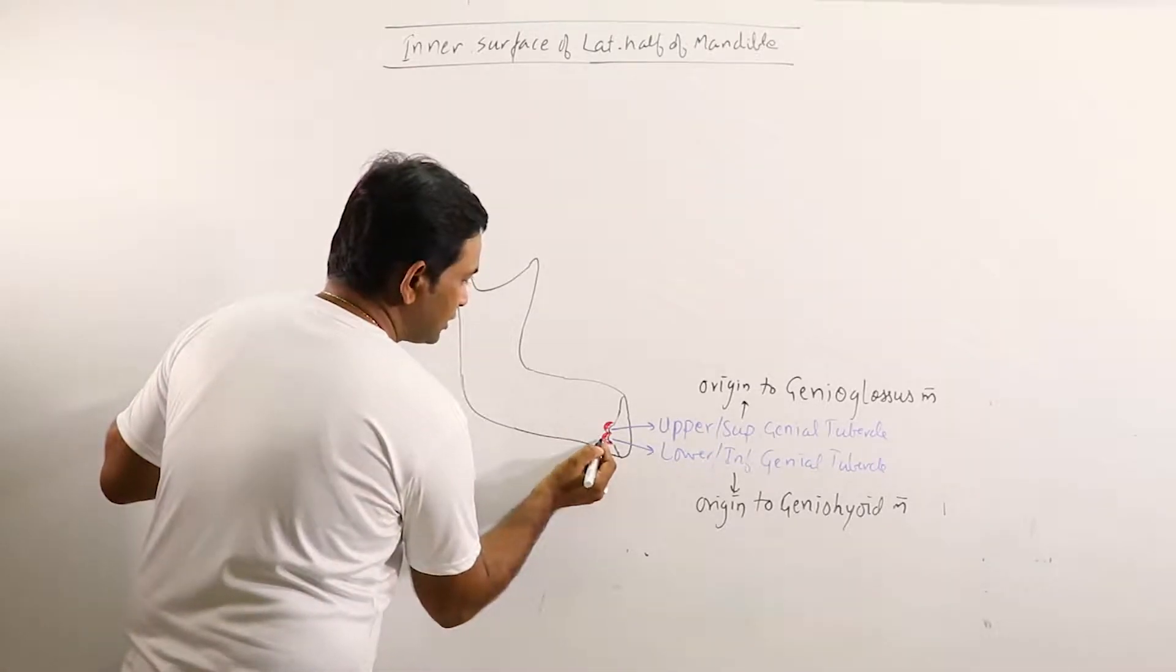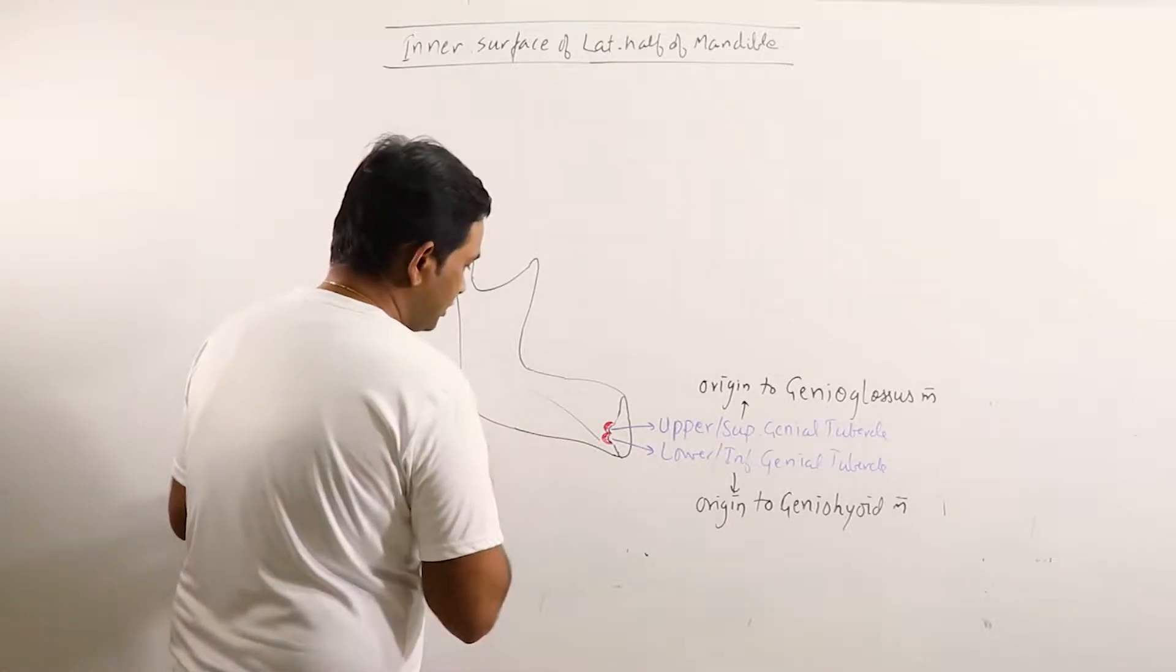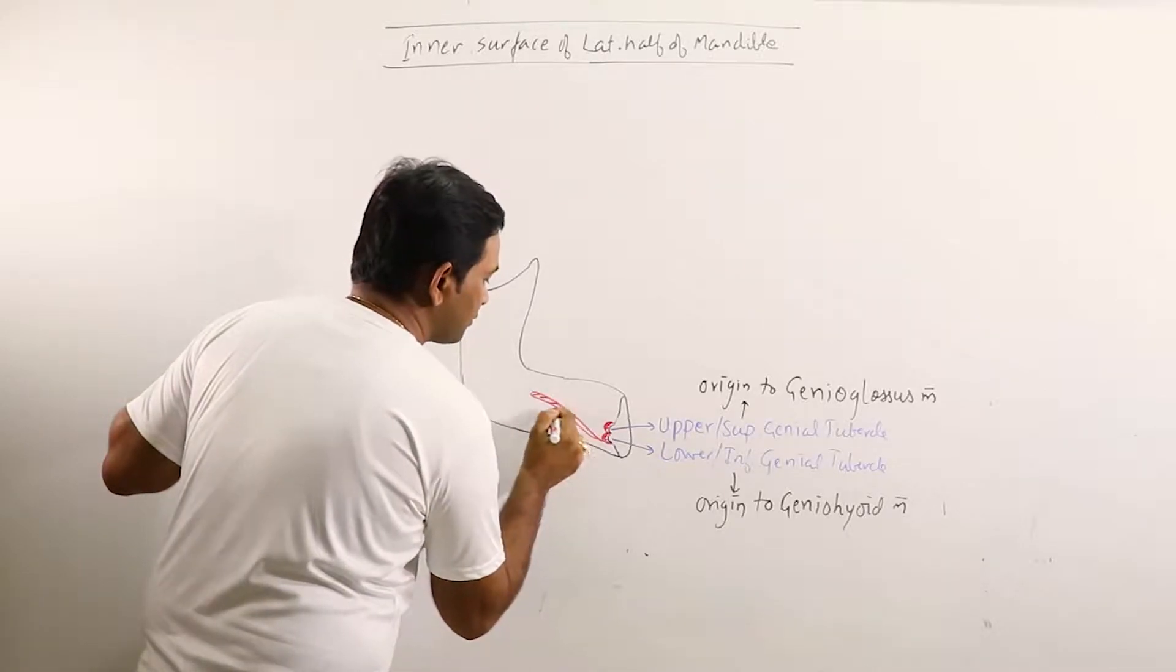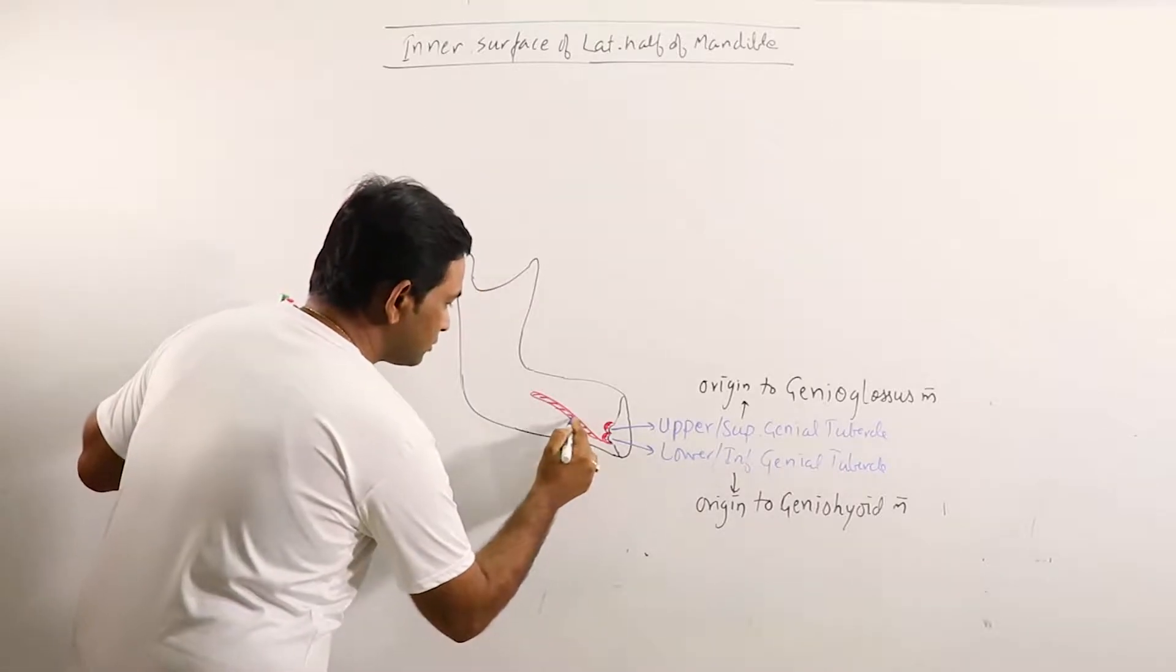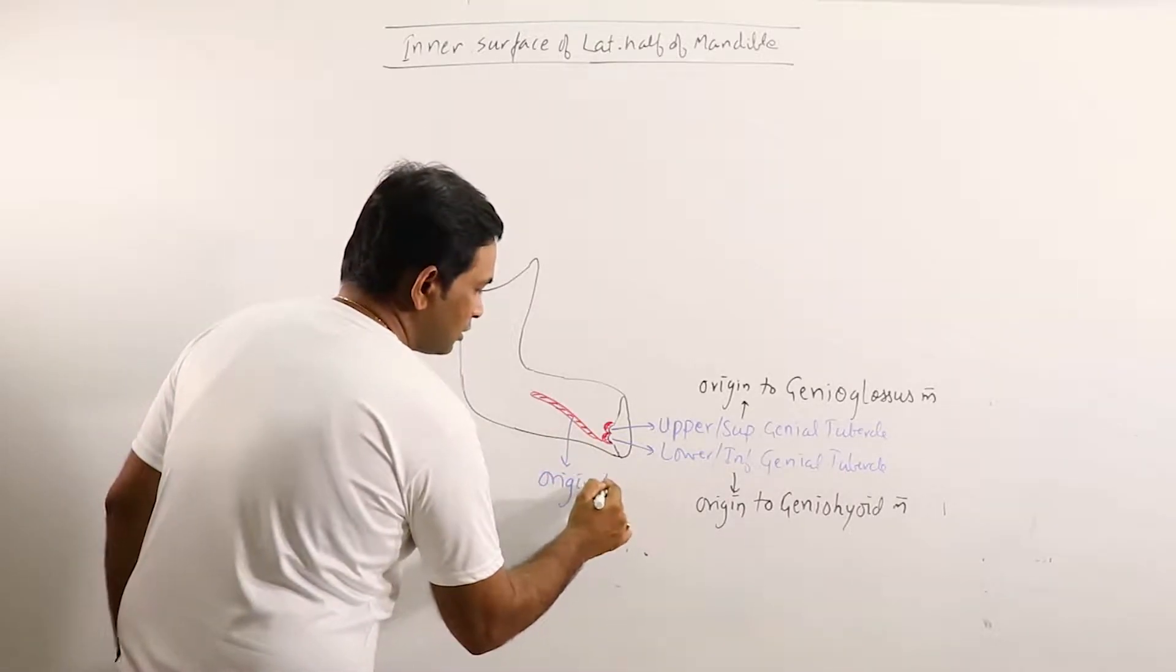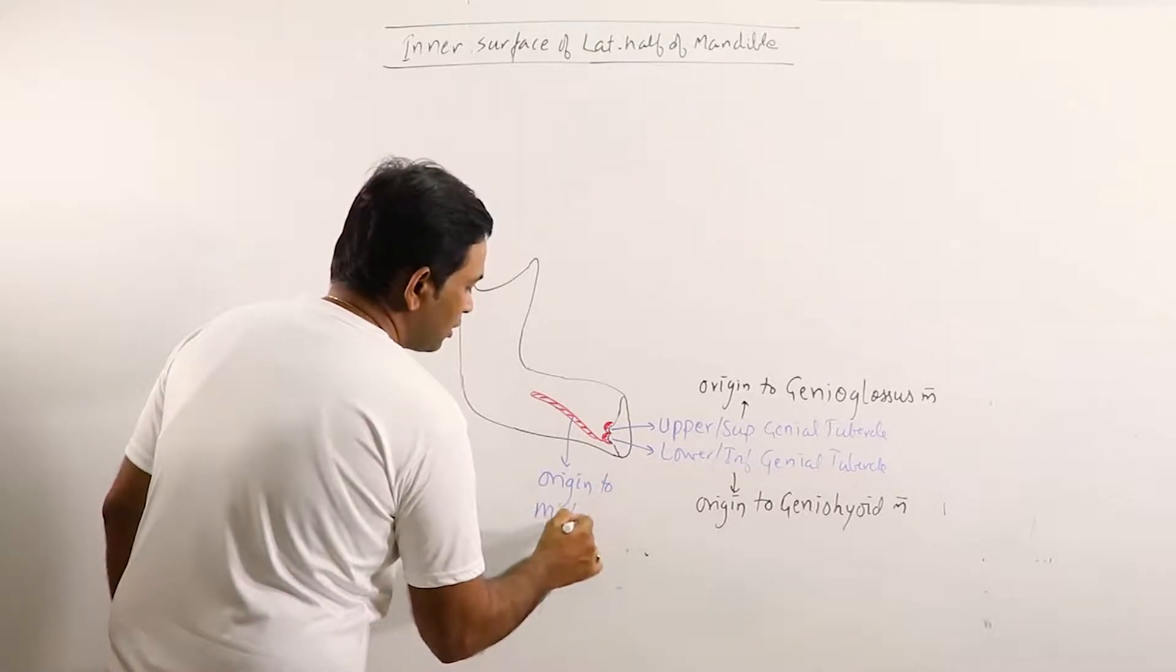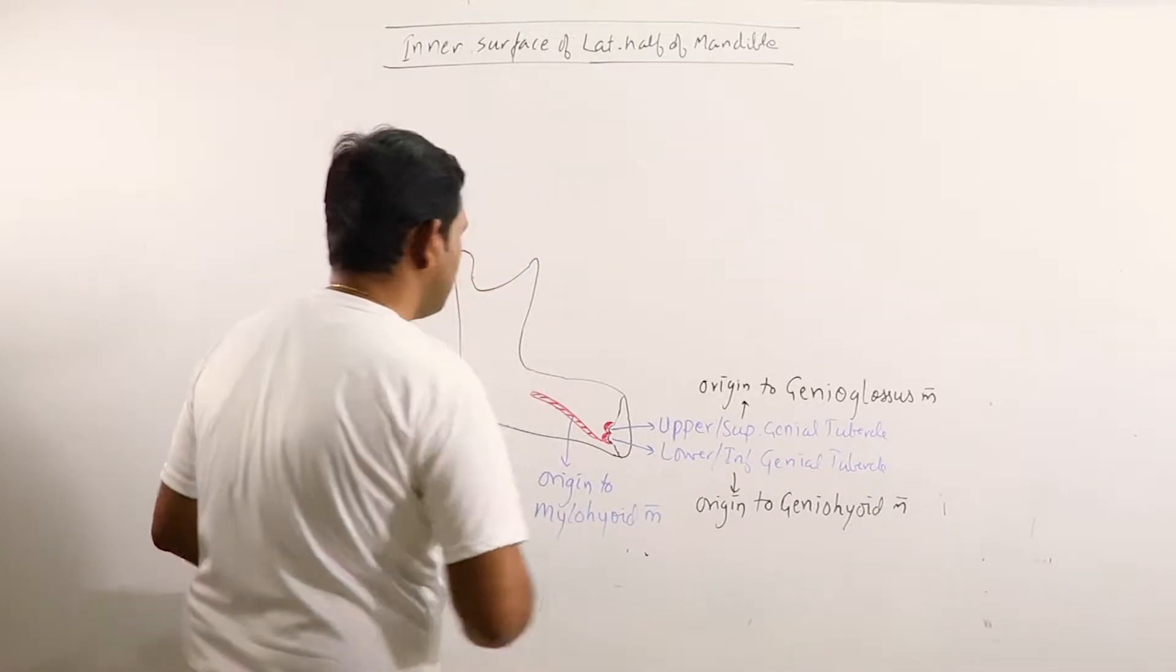Now this is the mylohyoid line. Mylohyoid line gives origin to the mylohyoid muscle. So this region gives origin to mylohyoid muscle.